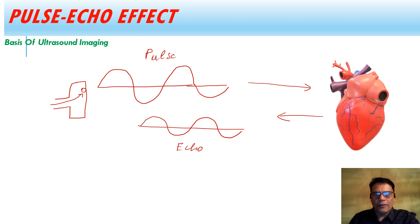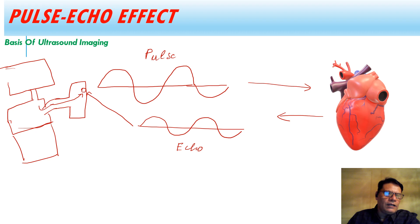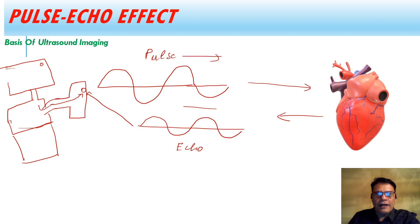It's no more a pulse — it's an echo, because it came back after reflection. This echo is received by the same piezoelectric crystal, which converts this echo into a dot on the monitor of the machine. This bright dot is the direct result of the pulse and its reflection. So this is called the pulse echo technique, which results in the formation of a bright dot.